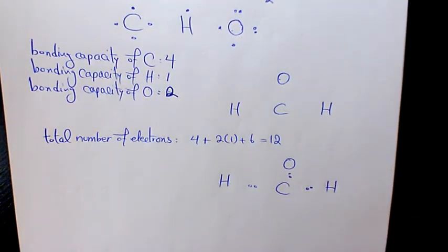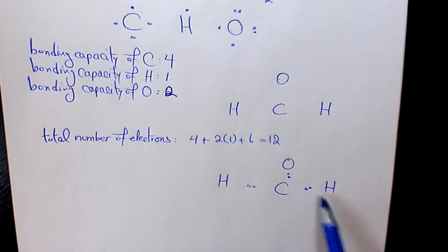Next step would be place pairs of the remaining valence electrons as lone pairs on the surrounding atoms only. And we need to follow the duet rule for hydrogen atoms, and we need to use the octet rule for other atoms. So here we have hydrogen. That follows duet rule. It has two electrons, so we are okay.